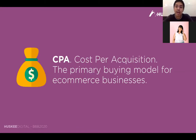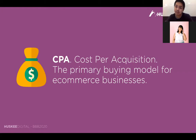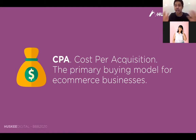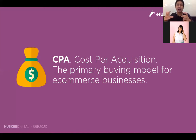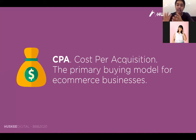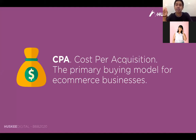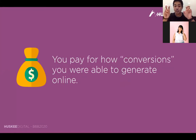Cost per acquisition, or CPA — this is the primary buying model for e-commerce businesses. The difference here is that with the cost per lead model, they typically don't finish the transaction online. For us at Husky, they reach out, we prospect them, sign a contract, and they pay via check or bank deposit — so I'm not able to track that whole payment journey after. But with cost per acquisition for e-commerce, you're able to see that whole journey from the first interaction all the way to when they make that online purchase.